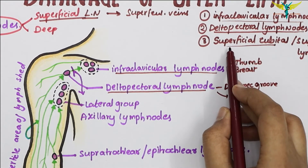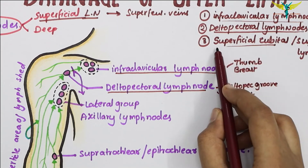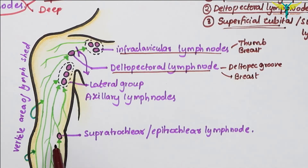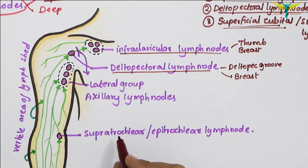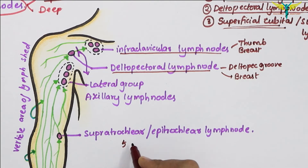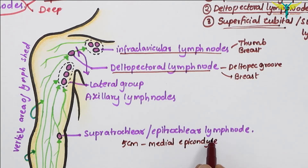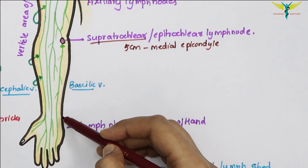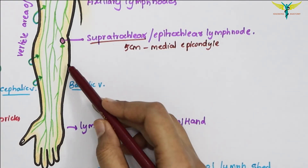The third group of superficial lymph nodes is the superficial cubital or supratrochlear lymph node, also called the epitrochlear lymph node. They lie five centimeters above the medial epicondyle, along the basilic vein. They drain lymph from the ulnar side of the hand and forearm.